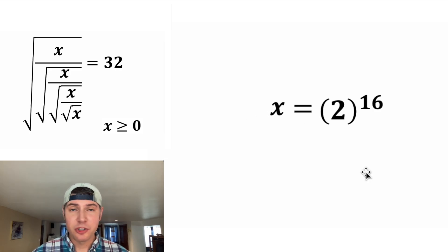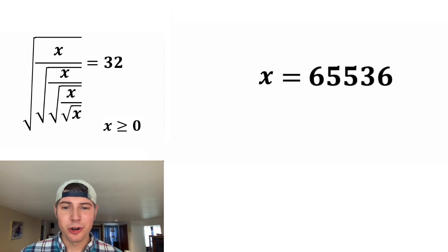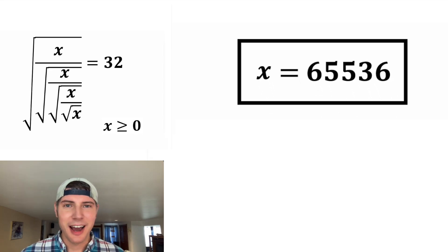And two to the 16th power is two multiplied out 16 times. That's going to be 65,536. And that is the answer to our question. Let's put a box around it. How exciting.